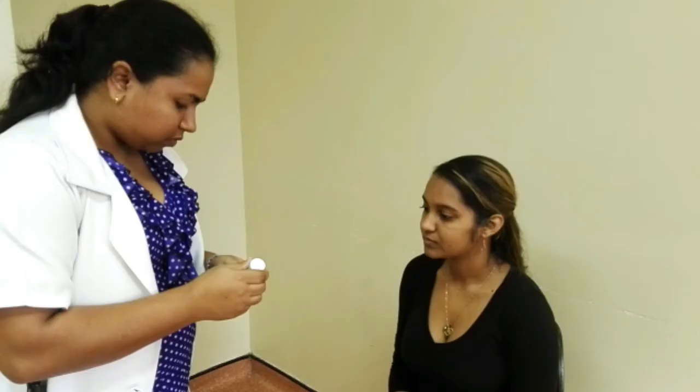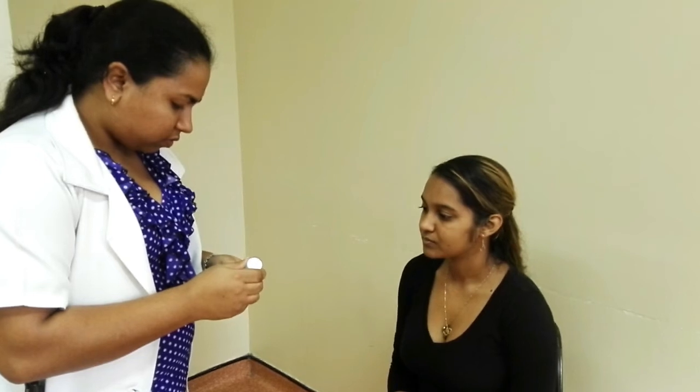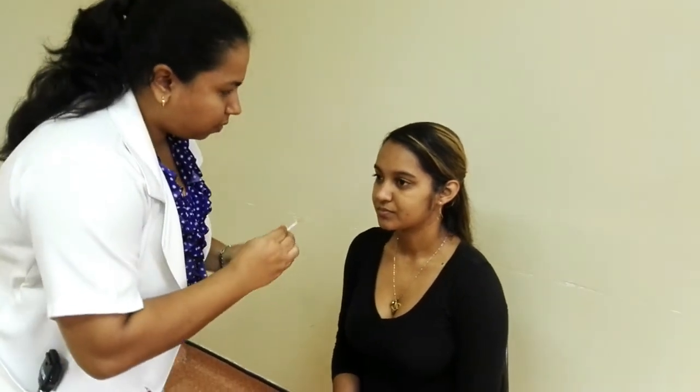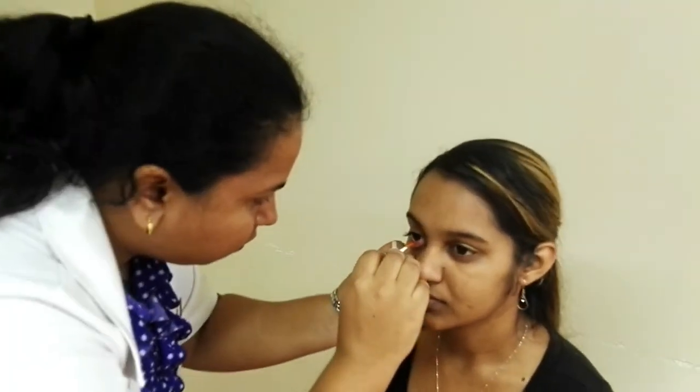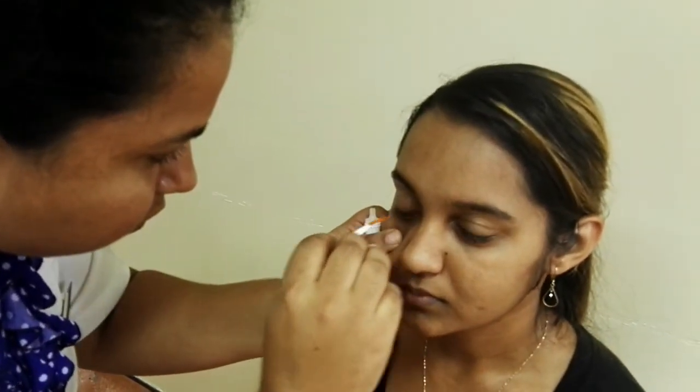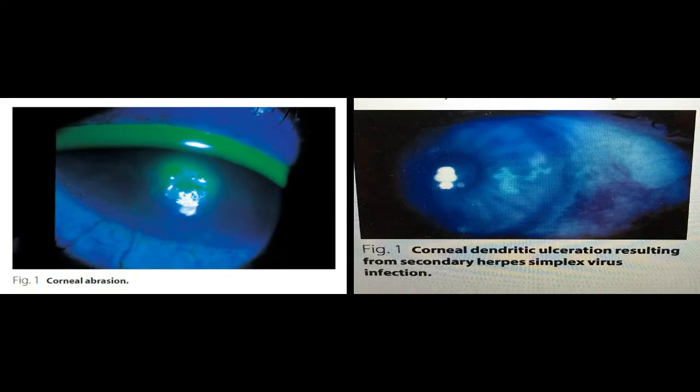Lightly wet a dye strip with an eyedrop — in this case, alcaine is being used. The patient can be warned that it may cause blurry vision afterwards. Gently dab the strip onto the conjunctiva of the lower lid and have the patient blink to spread the dye out over the cornea. The lights are dimmed and the cornea is examined under the cobalt blue filter of the direct ophthalmoscope. Identifiable pathology includes corneal scars and dendritic ulcers.